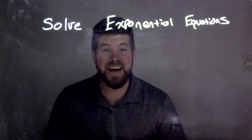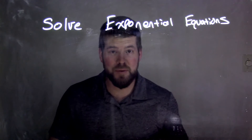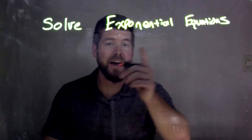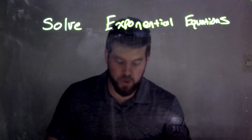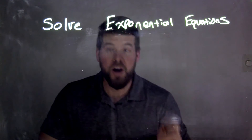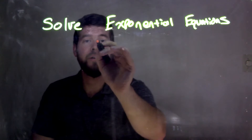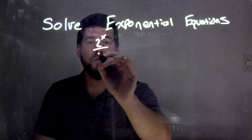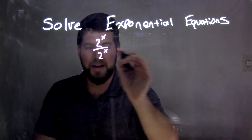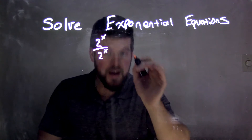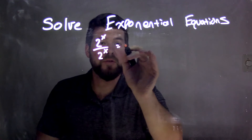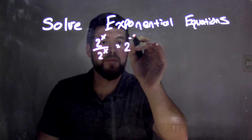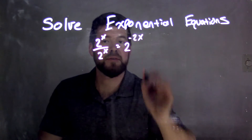Hi, I'm Sean Gannon, and this is MinuteMath, and today we're going to solve exponential equations. Our equation here is 2 to the x power over 2 to the x power, and that is equal to 2 to the negative 2x.